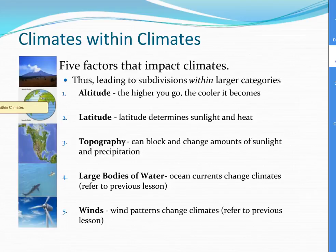There are five factors that impact climates. Altitude, or elevation — the higher you go, the cooler the climate. Latitude determines the sunlight and heat of a given area. Topography refers to changes in the landform, whether flat or hilly, and can block and change amounts of sunlight and precipitation. Large bodies of water affect climates — we've studied how ocean currents can change climate. And wind patterns change climates as well.